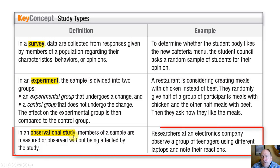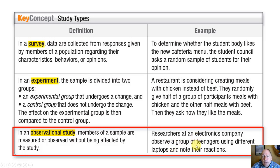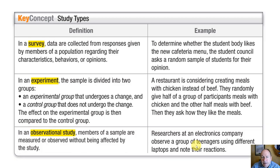In an observational study, we're looking at members of a sample that are measured and observed without being affected by the study. An example might be researchers looking at a group of teenagers using different types of electronic devices and noting their reactions. We're not doing anything to the population or sample — we're just observing.